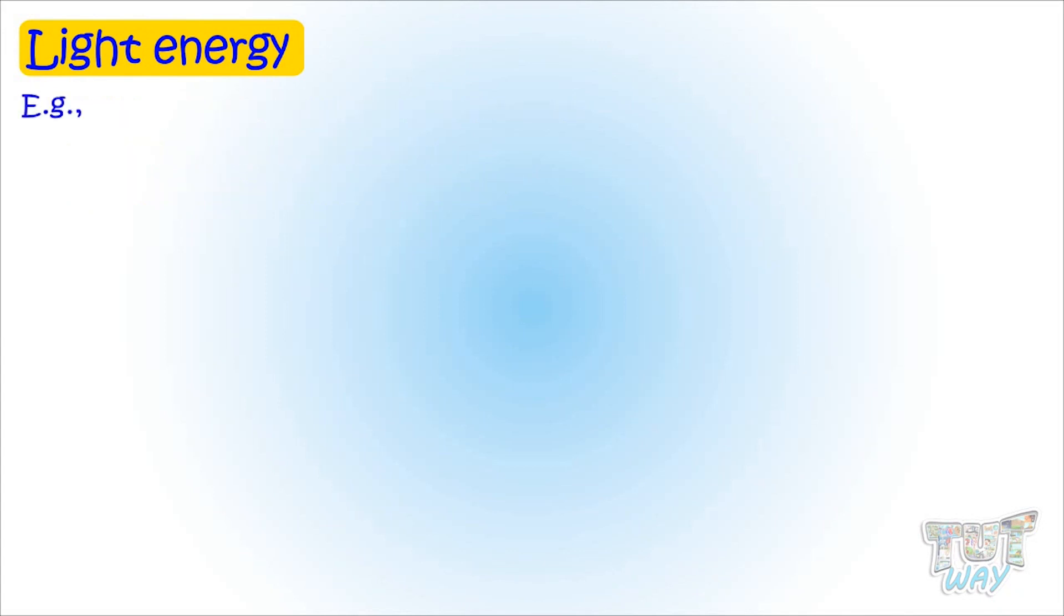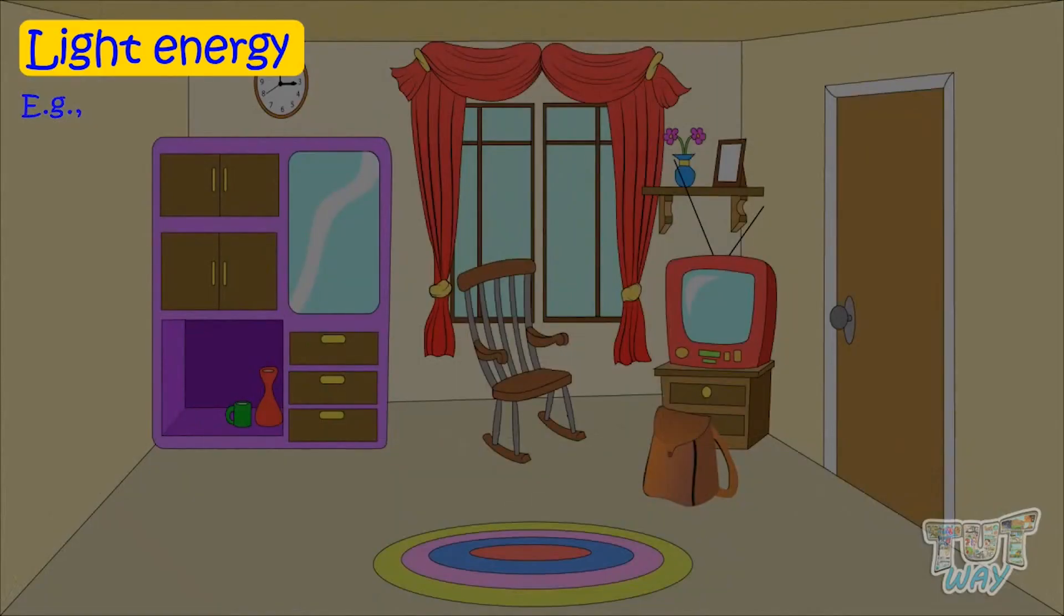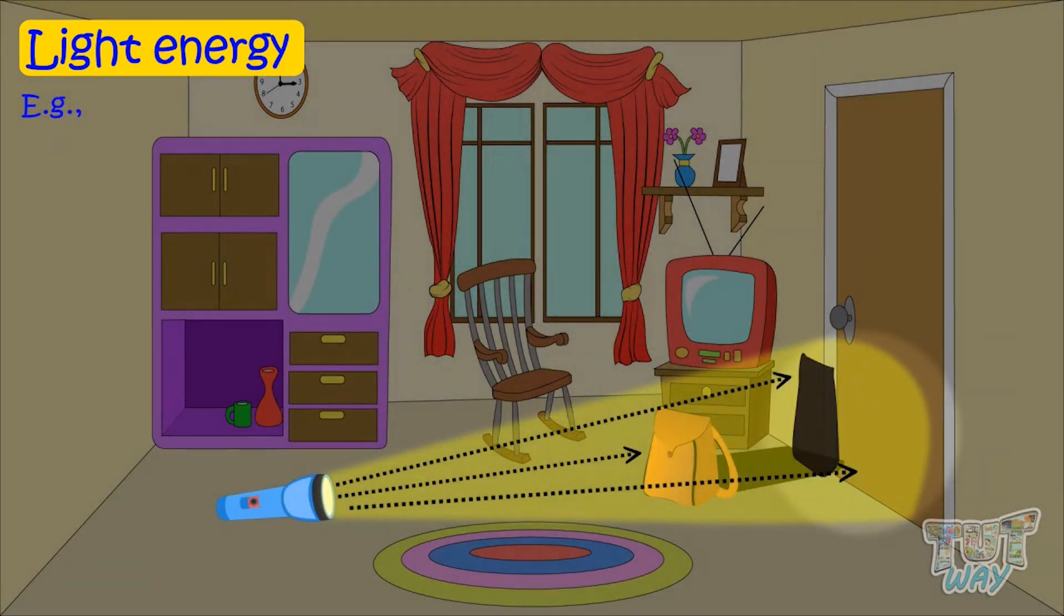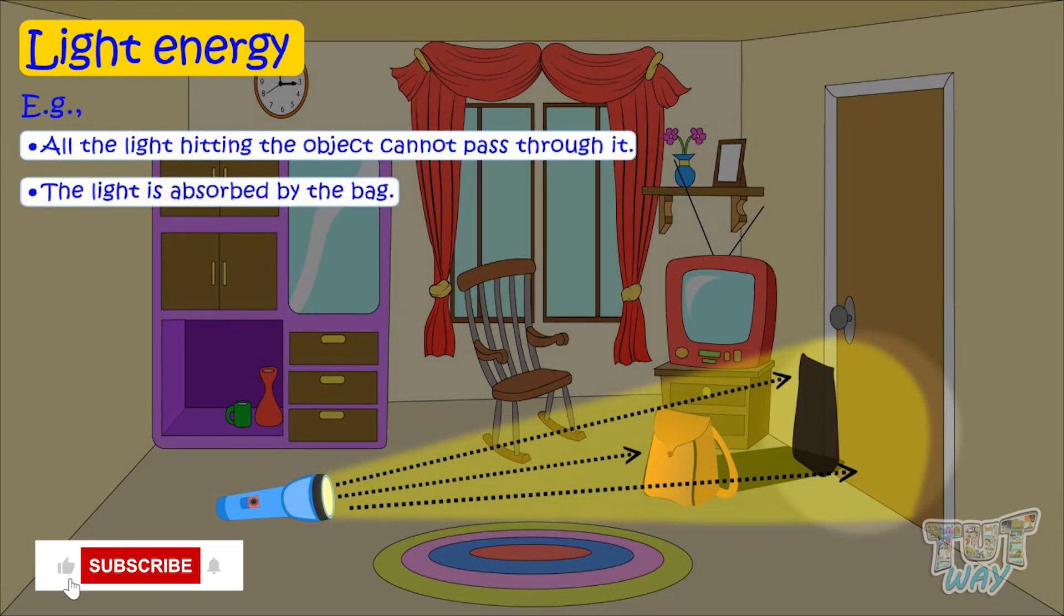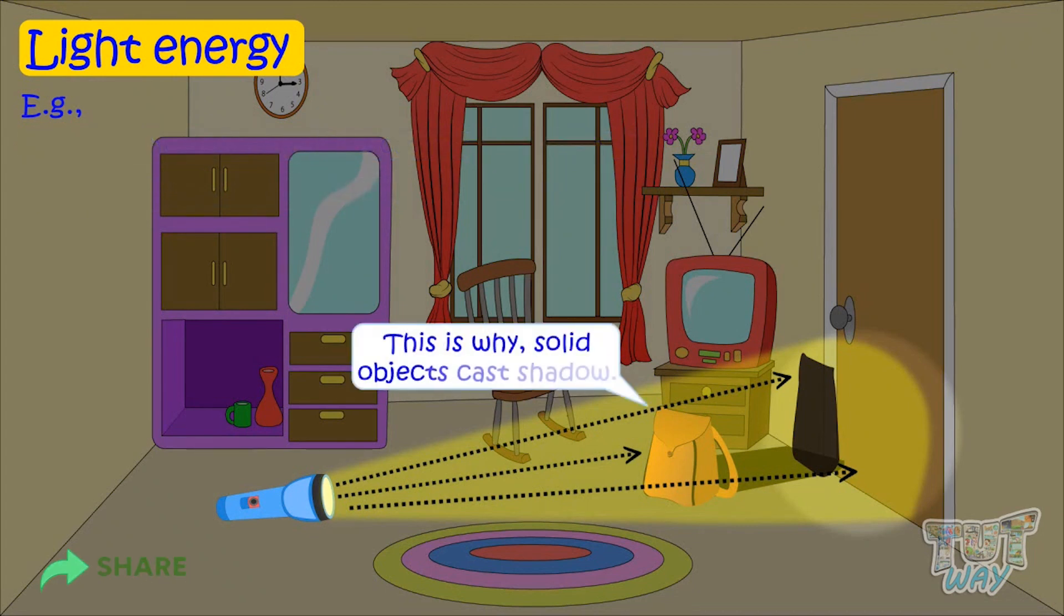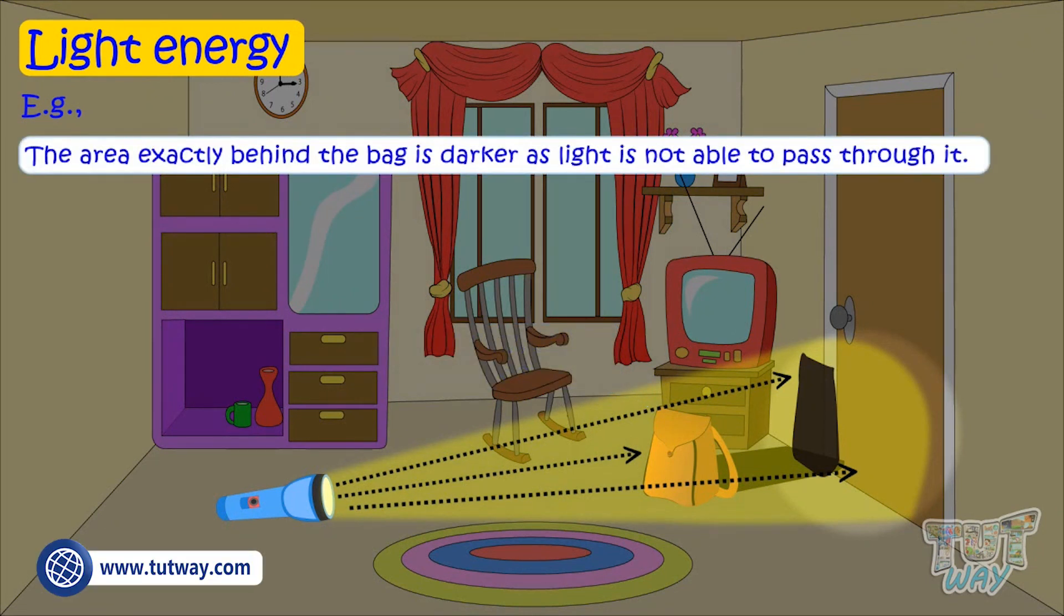Here is an example. If we strike light on a solid object, say a bag, the light hitting the bag will not pass through it. It will be absorbed by the bag as it's a solid object. Very little amount of light will pass through them. This is why solid objects cast shadows as light is not able to pass through them. The area exactly behind the bag is darker as light is not able to pass through the bag.